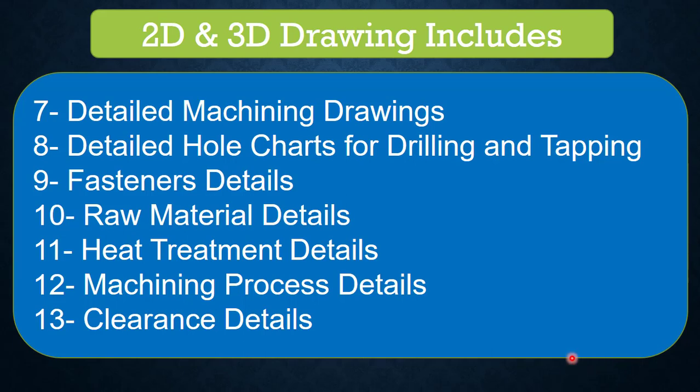Number eight, detailed hole charts for drilling and tapping. Even a simple die requires a minimum of 100 holes, with 70 to 80 percent being tapping holes for assembly. You can understand the importance of dedicated drawings for drilling and tapping — we will see in upcoming slides how the coordinates are given. Number nine, fastener details — since 70 to 80 percent of the holes are tap holes, we need to use different types of fasteners, both standard and manufactured, and all those details must be captured in the die manufacturing drawing.